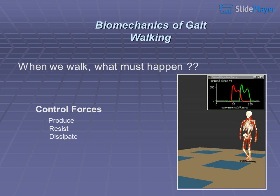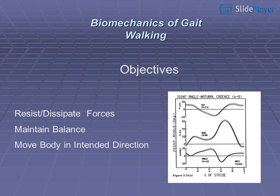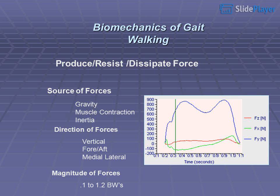When we walk, what must happen? We must control forces — produce, resist, and dissipate them. The objectives are: control forces, resist and dissipate forces, maintain balance, move the body in the intended direction, and conserve energy.